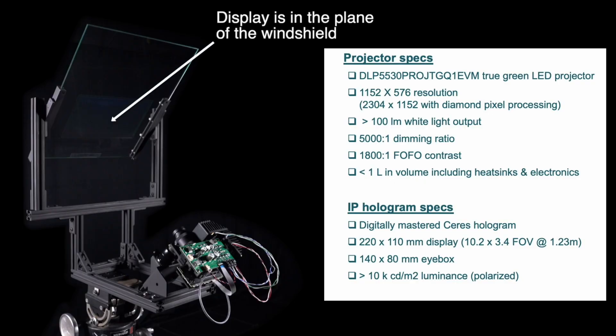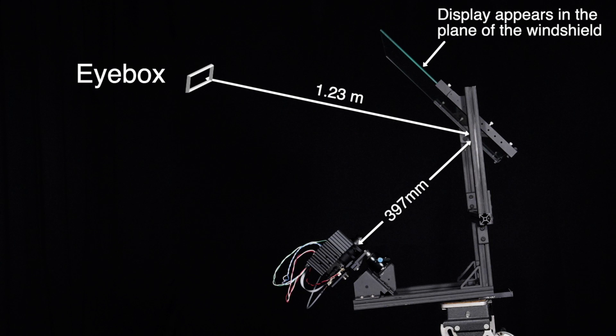The display appears in the plane of the windscreen and, unlike traditional HUDs, is not projected out in front of the car. The distance from the eye box to the display is relatively short compared to a head-up display.